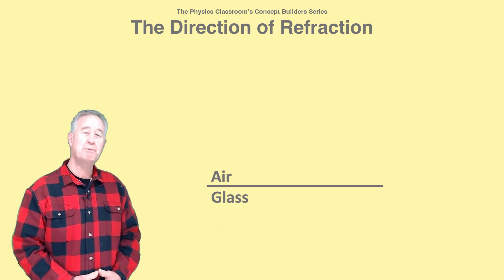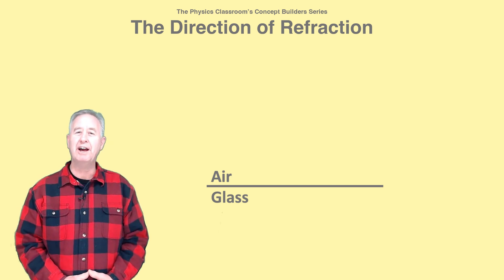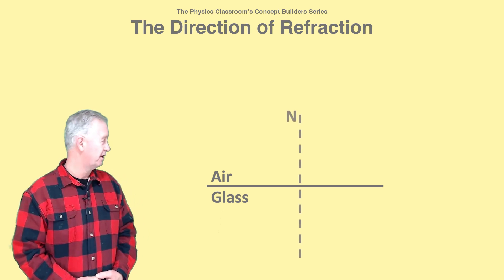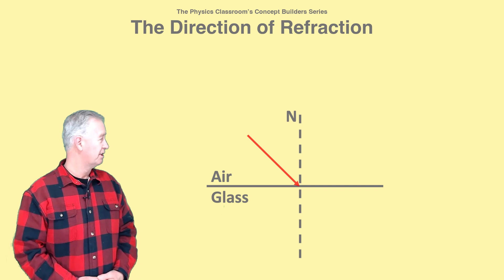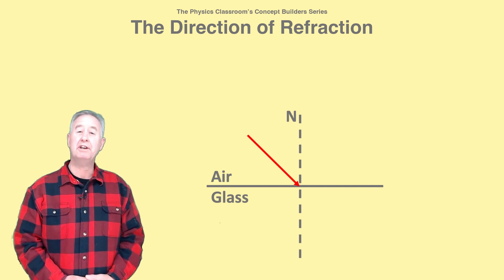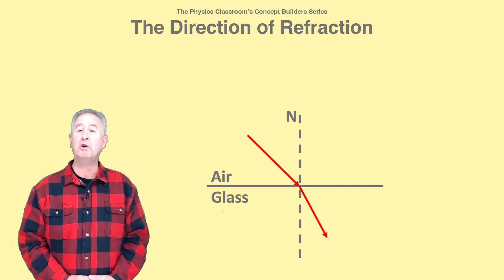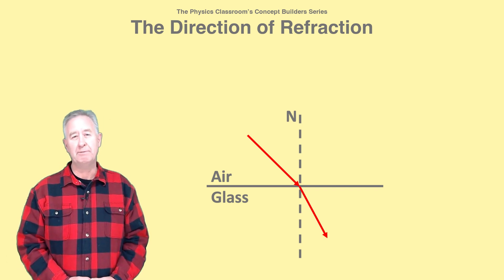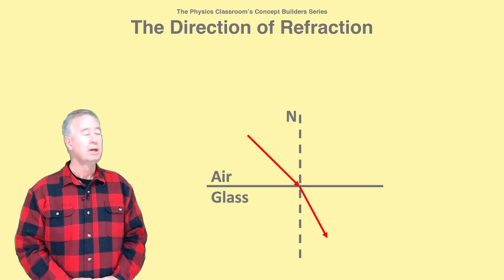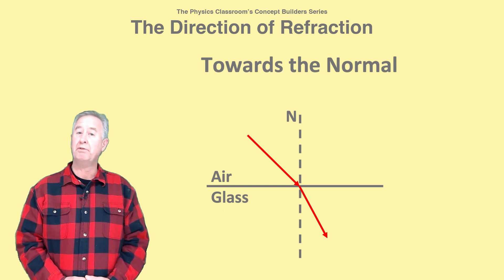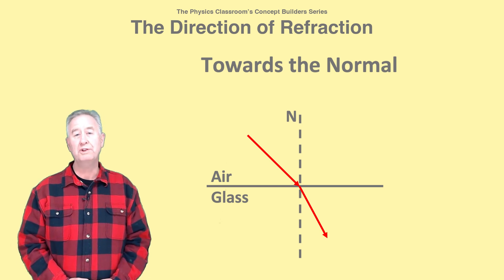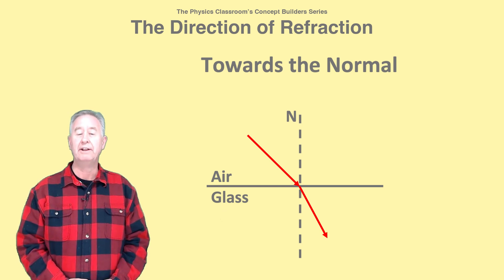This is the boundary between air and glass, and this is a normal line, and this is a light ray that is refracting or bending at the boundary. We say that the light ray has refracted towards the normal line.